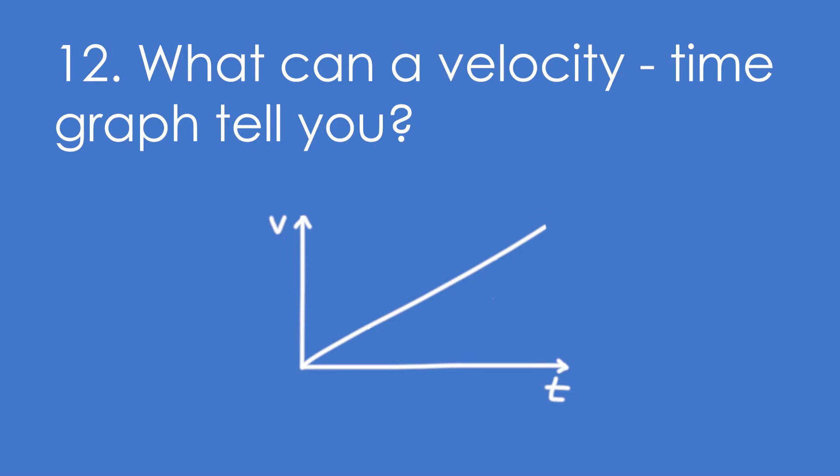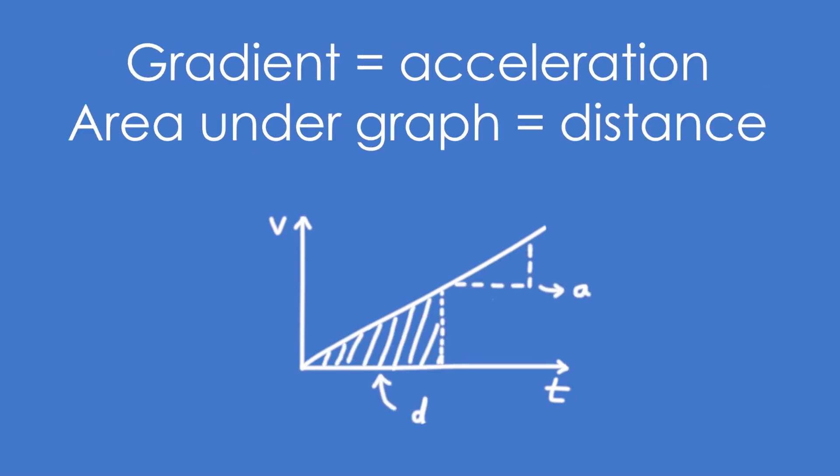12. What about a velocity time graph? The gradient of it is equal to acceleration, and the area under the graph is equal to the distance travelled.